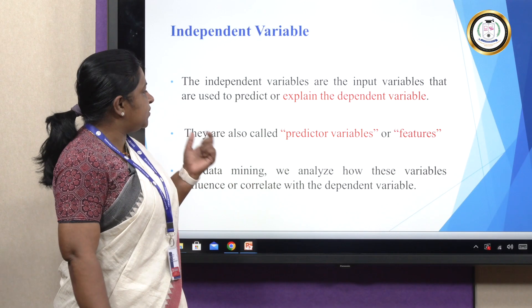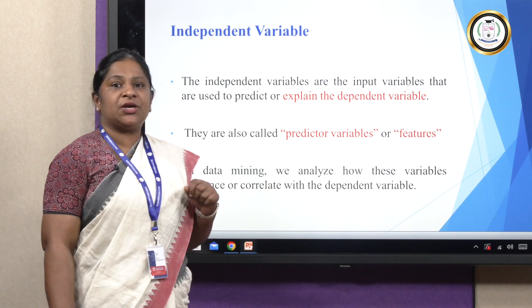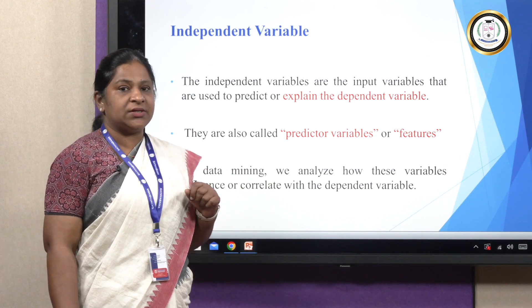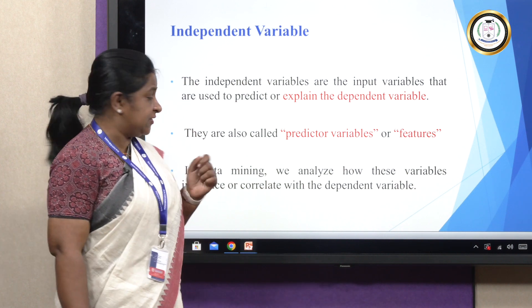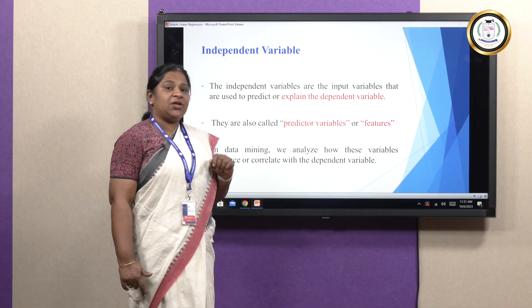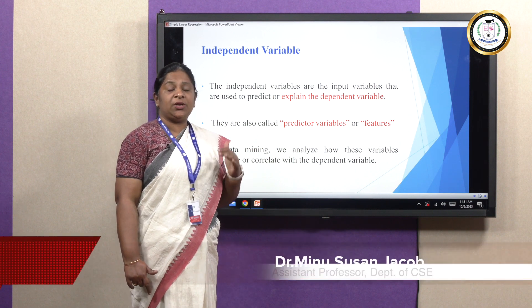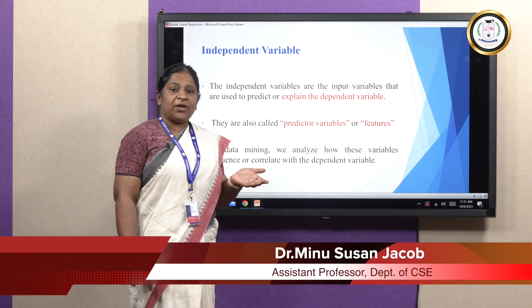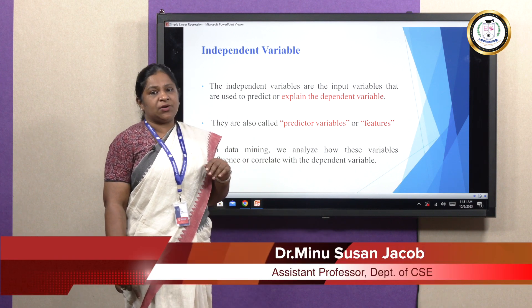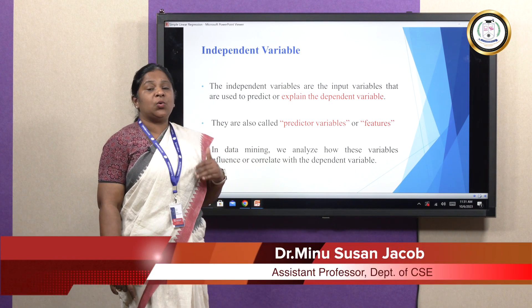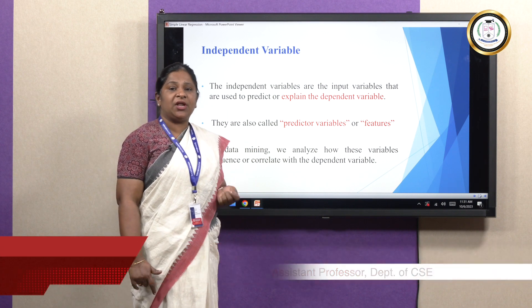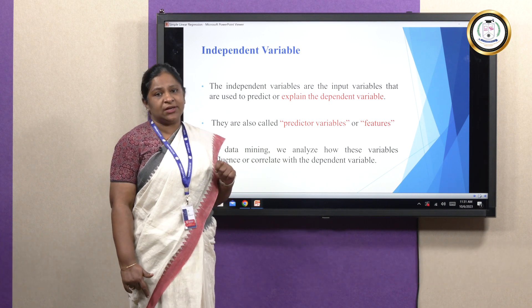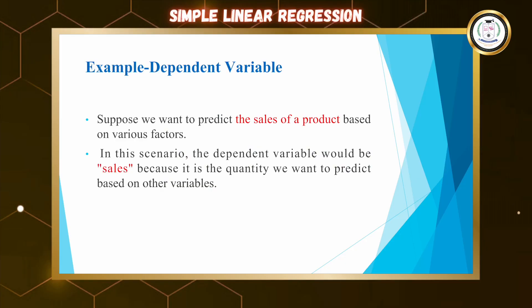Independent variables are the input variables using which we actually predict the output or target variable. These are also called predictor variables or features. In data mining, we analyze the relationship between the independent variable and the dependent variable — how changes in the independent variable affect the dependent variable.